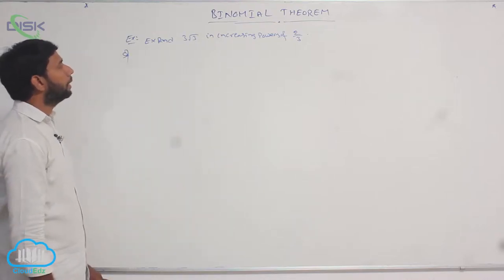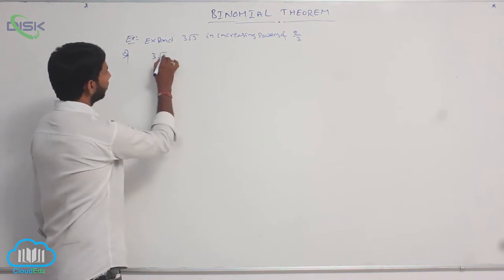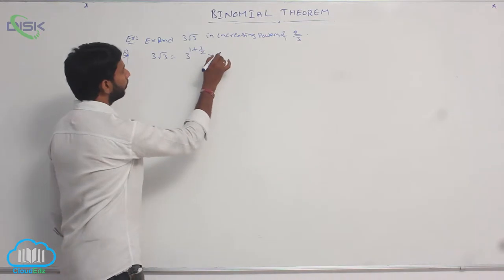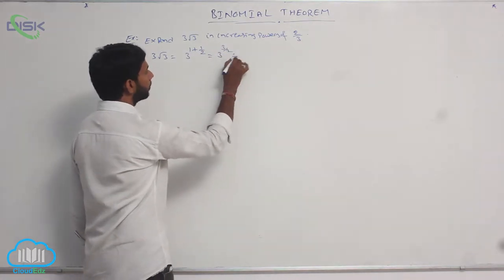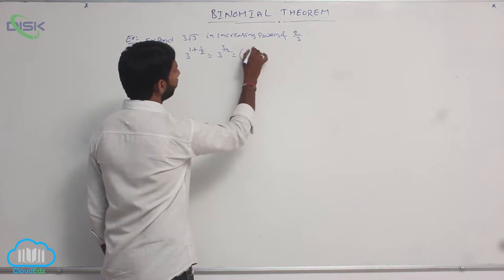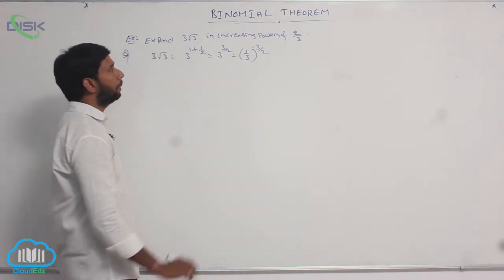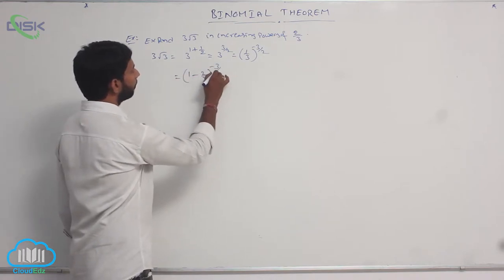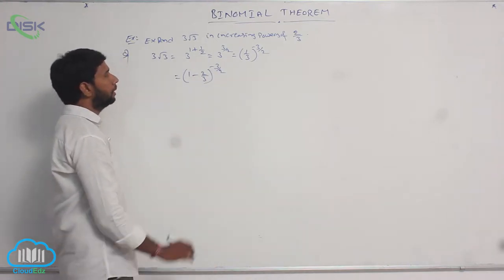Expand 3 root 3 in increasing powers of x. 3 root 3 can be written as 3 power (1 + 1/2) which equals 3 power 3/2. This can be written as (1/3) whole power minus 3/2. And 1/3 can be written as (1 - 2/3), so we get (1 - 2/3) whole power minus 3/2.